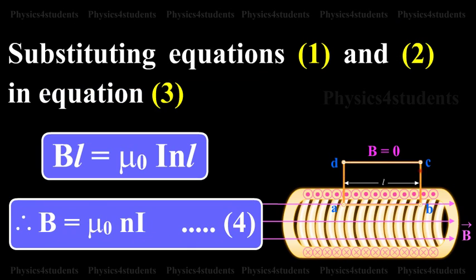Substituting equations 1 and 2 in equation 3, B L equals mu naught I N L. Therefore, B equals mu naught into N I. This is equation number 4.